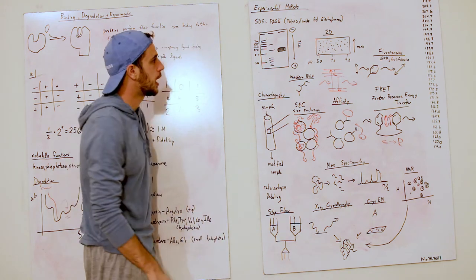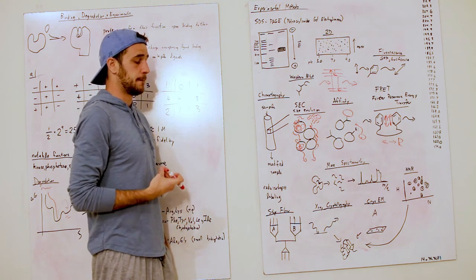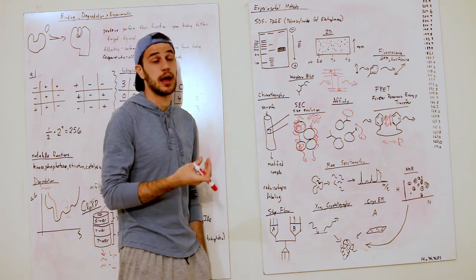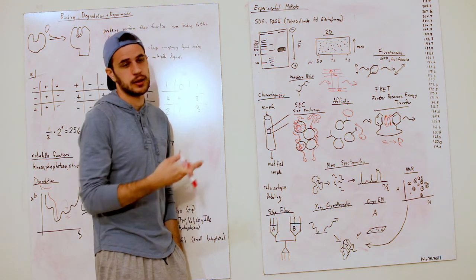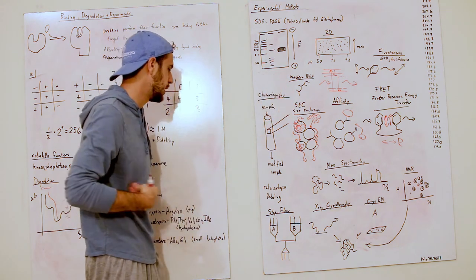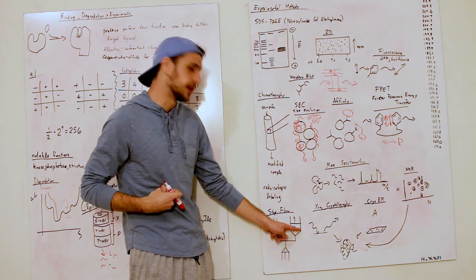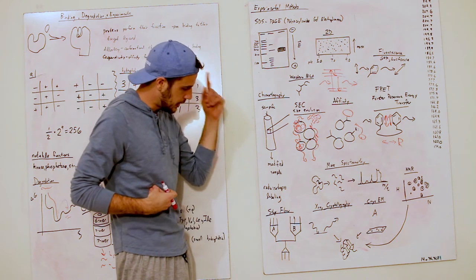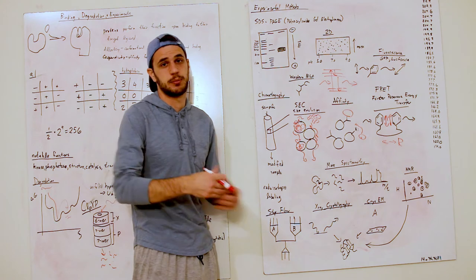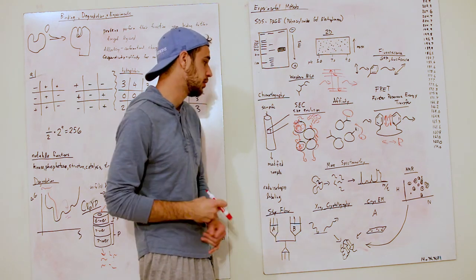You have things called radio labeling where you can use a radioactive isotope on these proteins to incorporate them in and then you can tell, you can further verify with SDS-PAGE and do some other experiments. You have stop flow where you take a sample of protein and a substrate or ligand and then you push them together and you have a detector and you can get the pre-steady state kinetics from this sample. That is a very biochemical technique. So, alright.